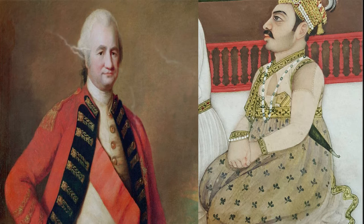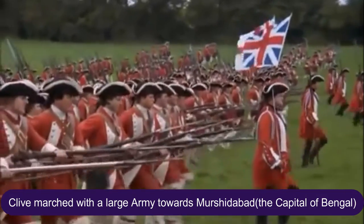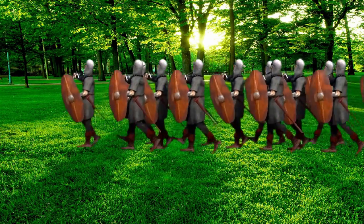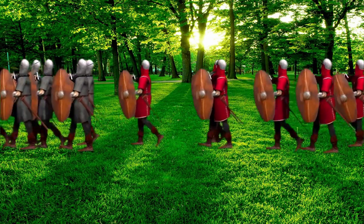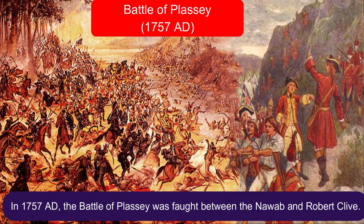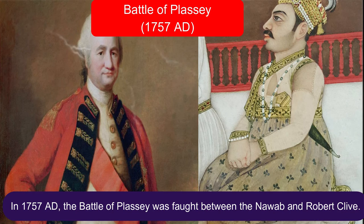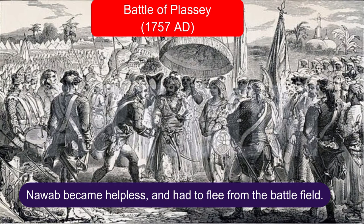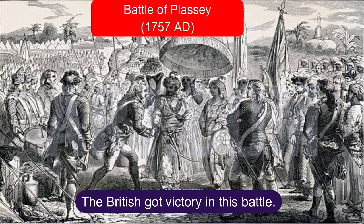After this, Clive accused the Nawab of violating the Treaty of Alinagar and marched with a large army towards Murshidabad, the capital of Bengal. The Nawab of Bengal also headed with his army to attack the British. In this way, in 1757, the Battle of Plassey was fought between the Nawab and Robert Clive. During the battle, Mir Jafar, the chief commander of the Nawab's army, deceived the Nawab by refusing to attack the British. In this situation, the Nawab became helpless and had to flee from the battlefield.